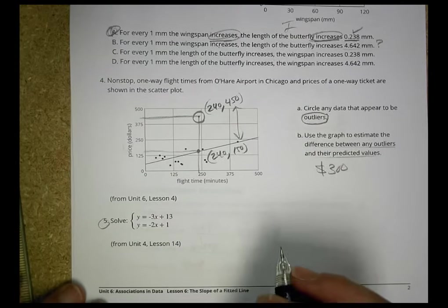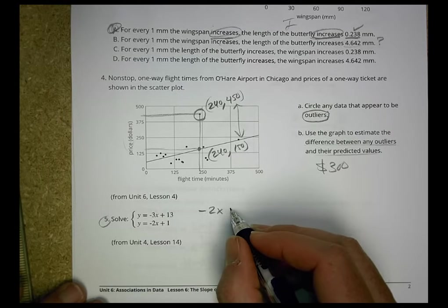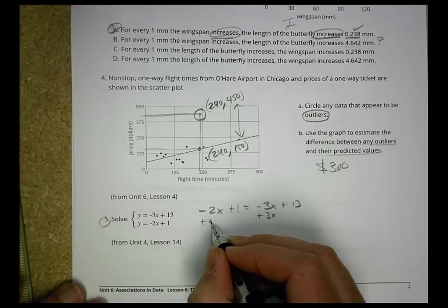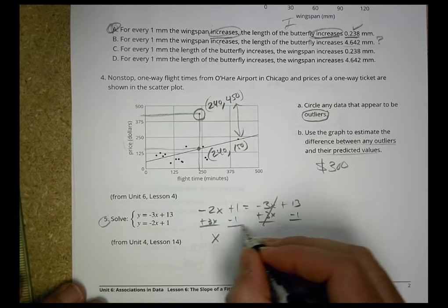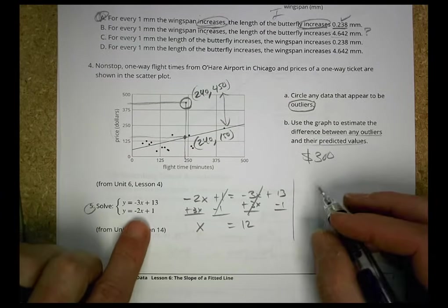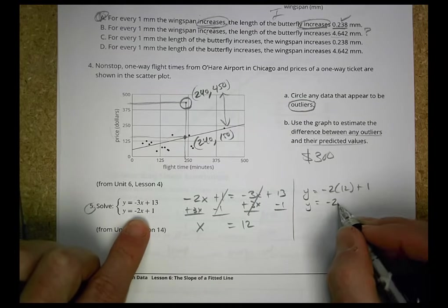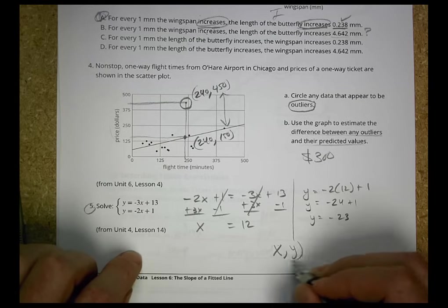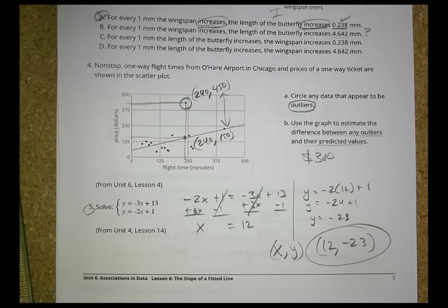Okay. Next one. Number five. We're going to solve this. This is the equations. So we'll set them equal to each other and solve for x, and then we'll plug it back in to solve for y. So negative 2x plus 1 equal to negative 3x plus 13. Let's add 3x to both sides. So that goes away. Negative 2 plus 3 becomes x. Let's subtract 1 from both sides. 13 minus 1 is 12. So x equals 12. Now let's plug that in to the equation. We'll do this one. y equals negative 2 times 12 plus 1. So that becomes y equals negative 24 plus 1. So y equals negative 23. So our value as an x and y is going to be 12 comma negative 23. And that is our solution.